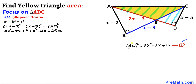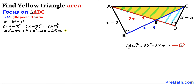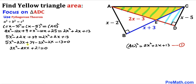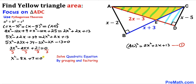Using equation one, we know AC squared equals 2x squared plus 2x plus 13. Substituting that in and combining like terms, then moving all terms to one side, we get an equation divisible by 3 across the board. Dividing each term by 3 gives us x squared minus 8x plus 7 equals 0. This is a quadratic equation we will solve by grouping and factoring.